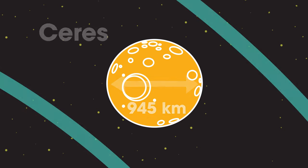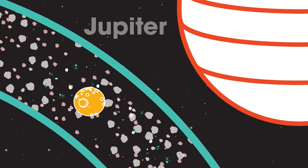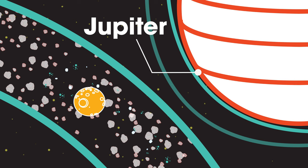It is thought that the asteroid belt is part of a planet that failed to form because of the gravitational influence of nearby Jupiter.